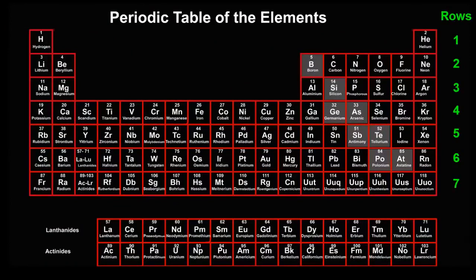You can see that the periodic table is also arranged in vertical columns, which scientists call groups. How many groups are there?